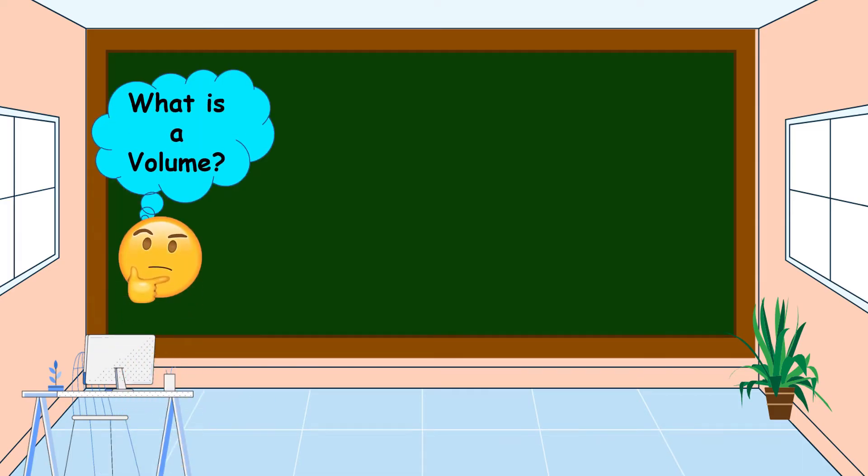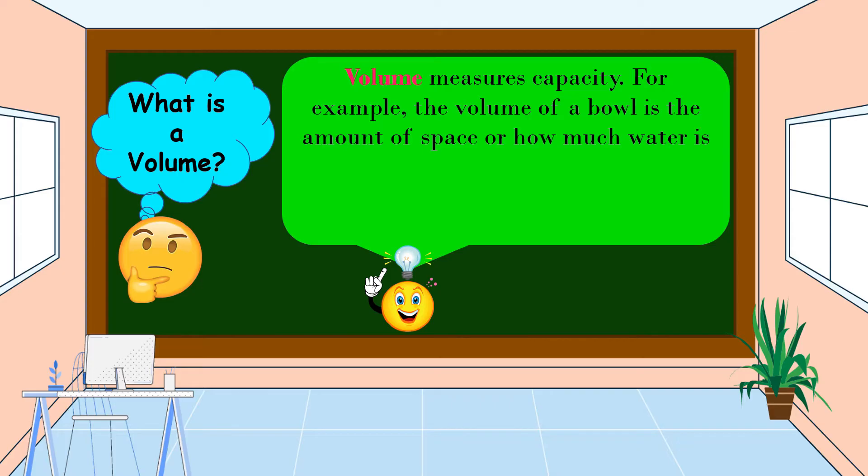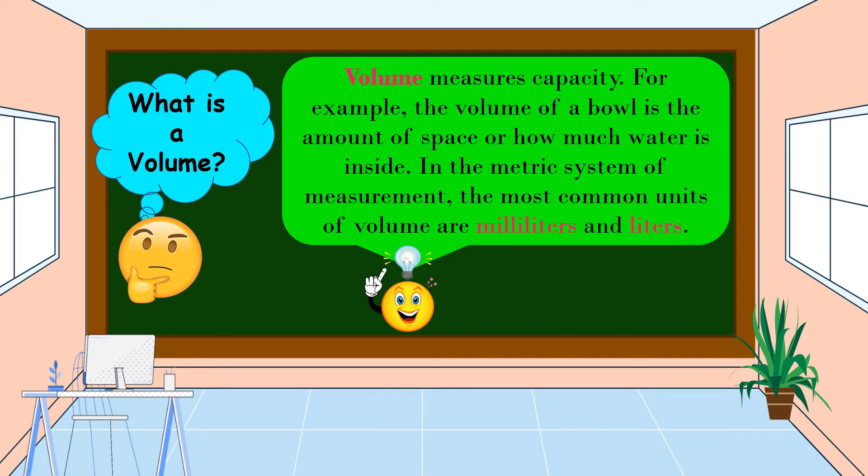What is volume? Volume measures capacity. For example, the volume of a bowl is the amount of space or how much water is inside. In the metric system of measurement, the most common units of volume are milliliters and liters.